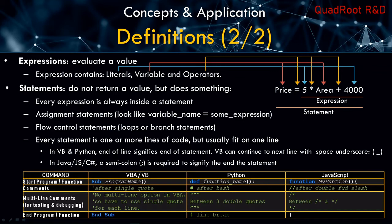In VBA, you start a program using the 'Sub' keyword, followed by the identifier program name and round brackets, and you end it with 'End Sub'. In Python, you don't name your programs — they are the name of the file itself — but you do name your functions using the 'def' keyword, followed by the function name, round brackets, and a colon. The colon signifies that everything below belongs to this function and should be properly indented. The end of a function in Python is just a line break, which is why maintaining indentation and line breaks is important.